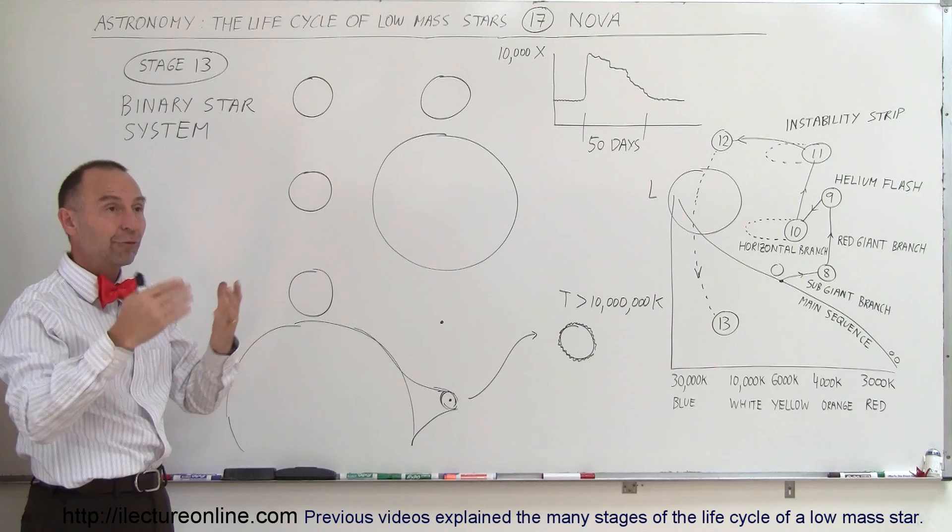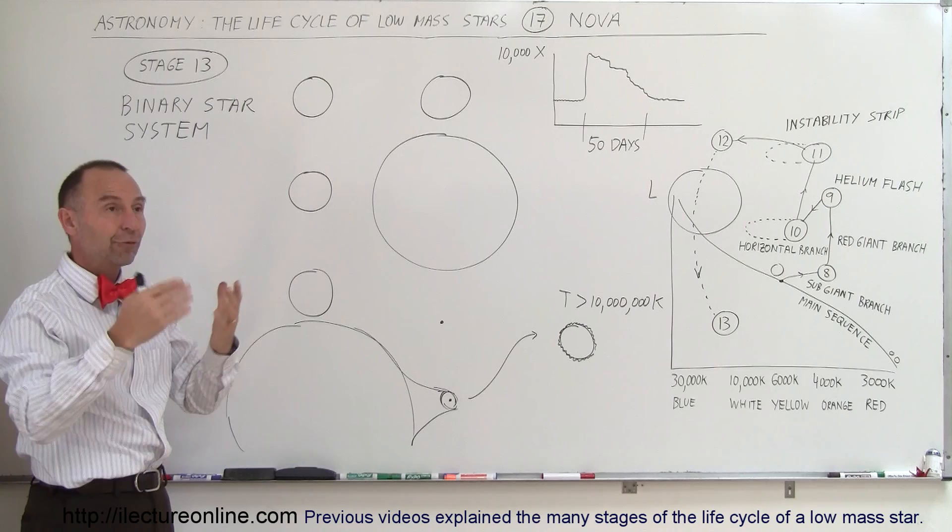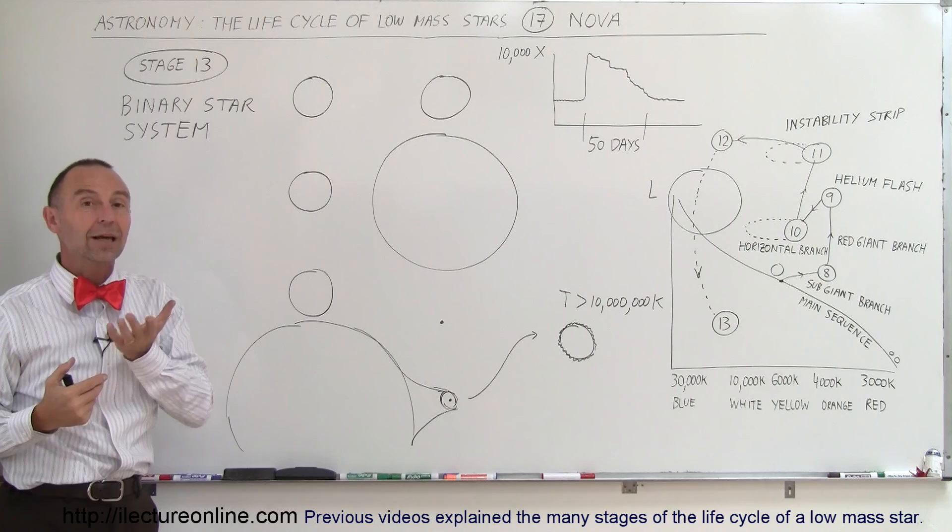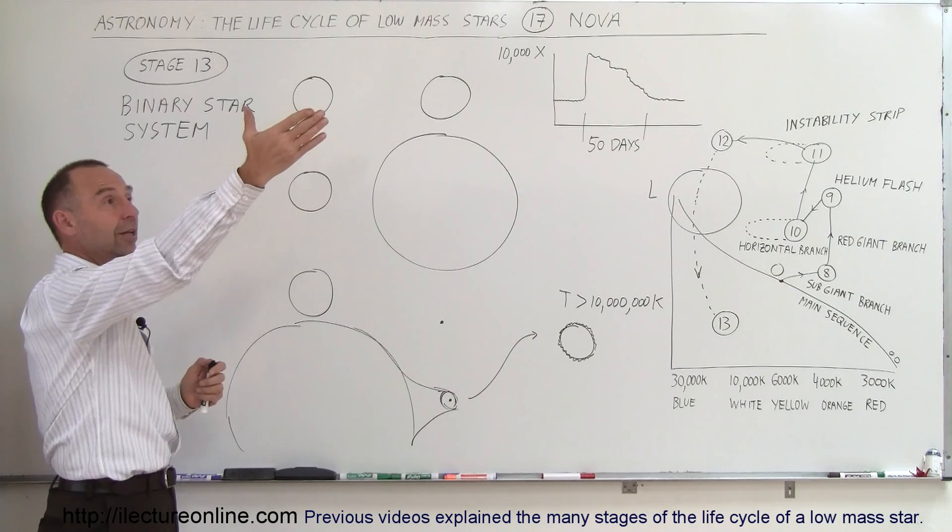It would be there for a number of weeks, then slowly the star would disappear from view. It was almost like there was a new star there where there was no star before. Nova is really a literal translation for 'new' or 'new star.' So when they saw this new star, they'd say, 'Oh look, there's a nova, there's a new star there,' and then it would disappear.